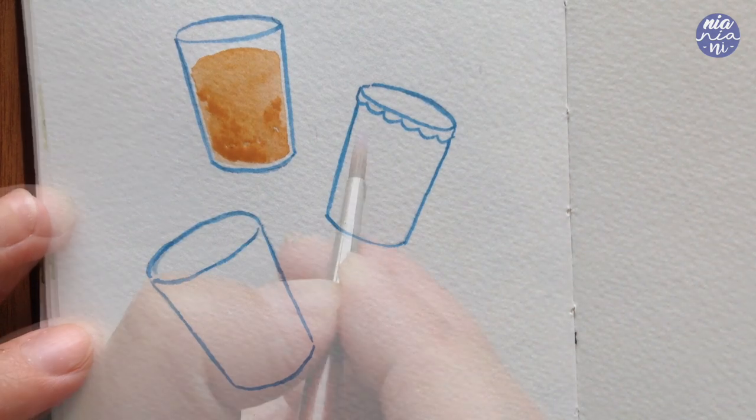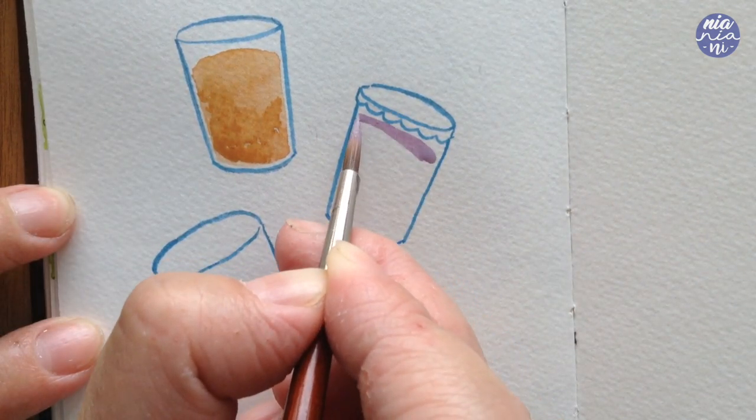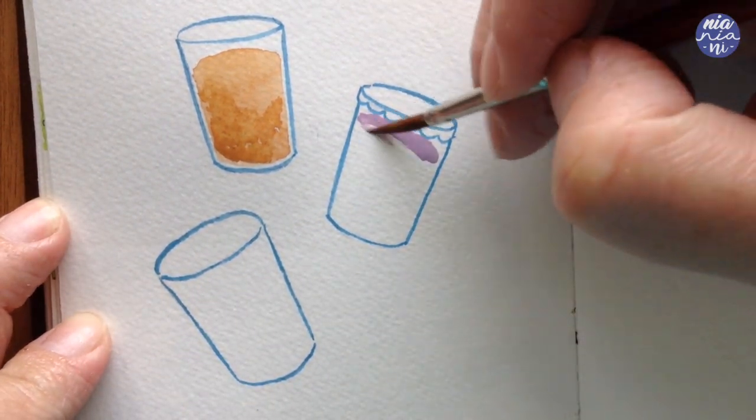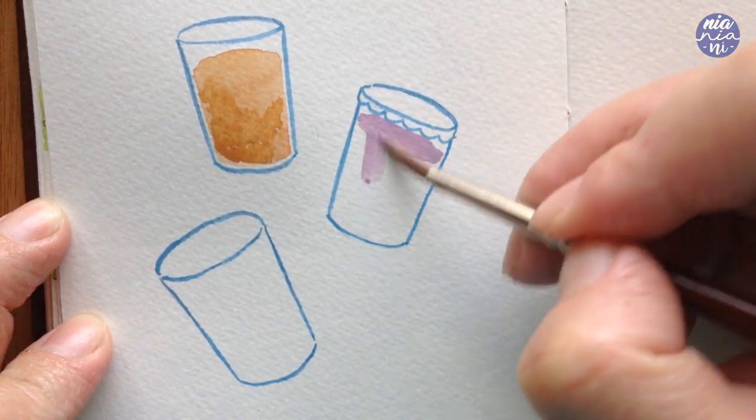While the paint is still wet, I also like to add a bit of thicker consistency of paint and dab it randomly at the bottom or the side of the cups, just to give an uneven surface for the drink. And I'm going to do the same thing for all the three flavors.